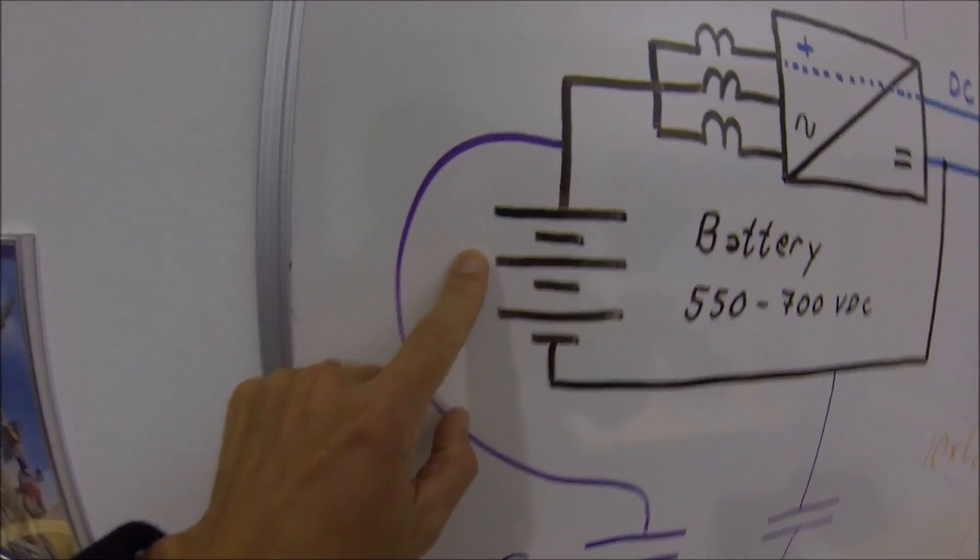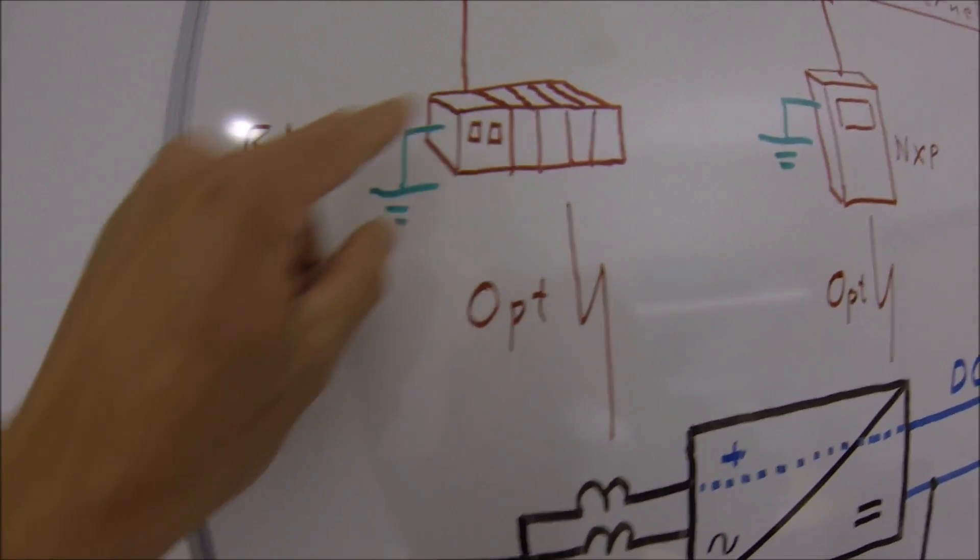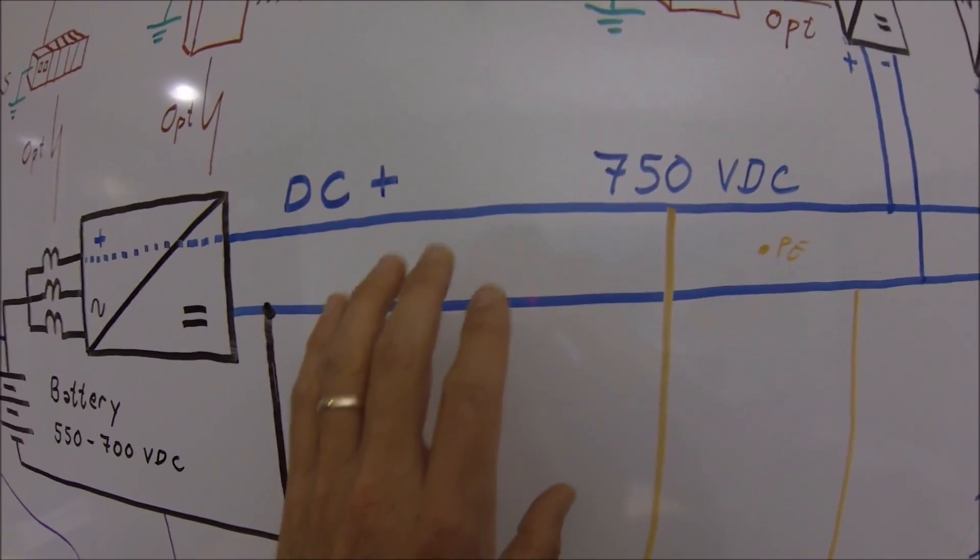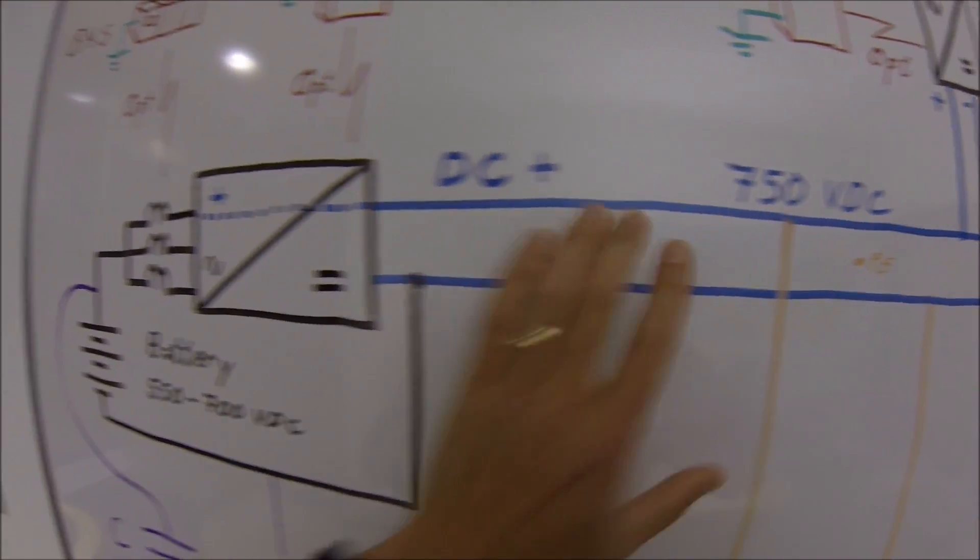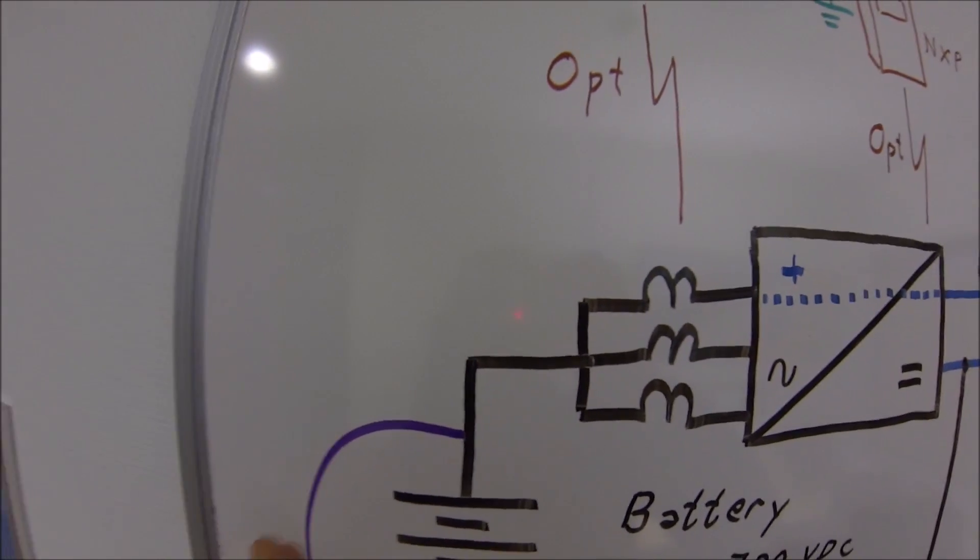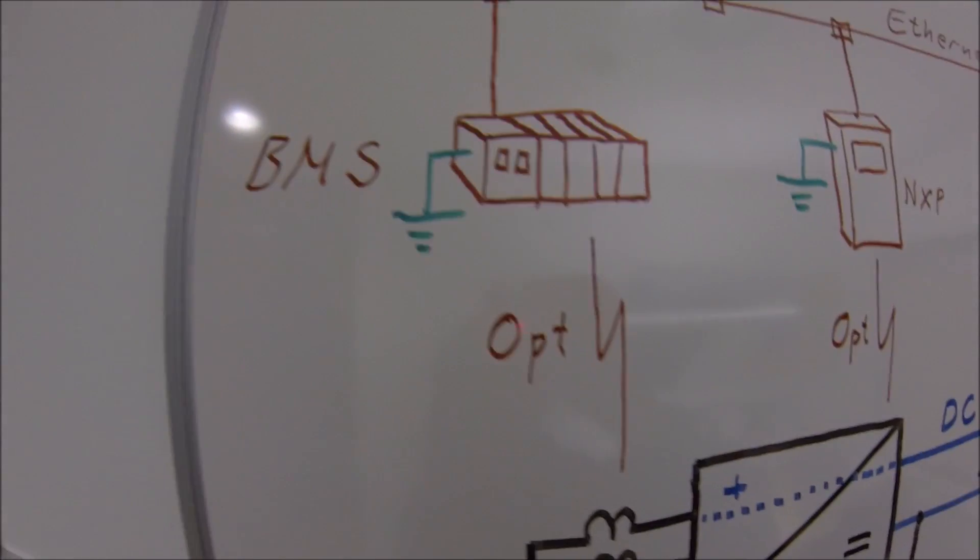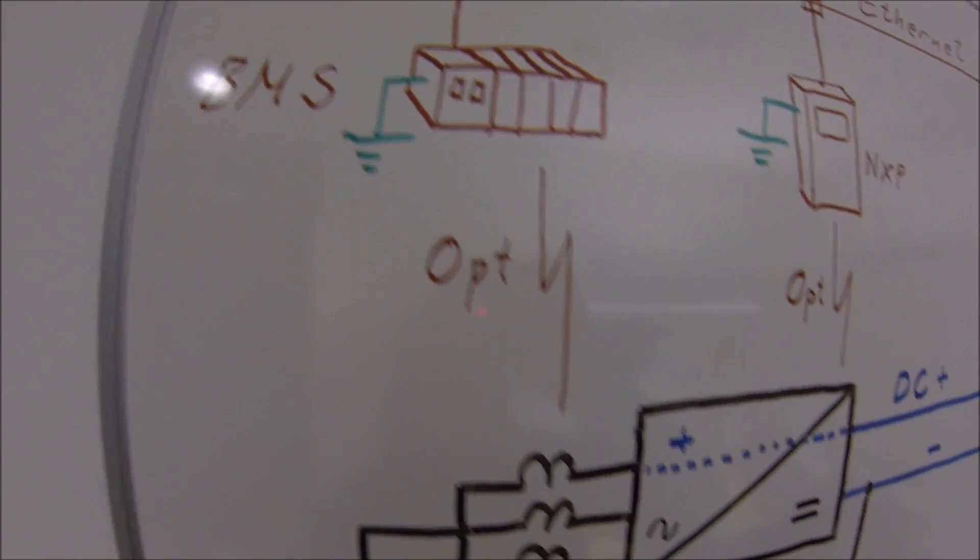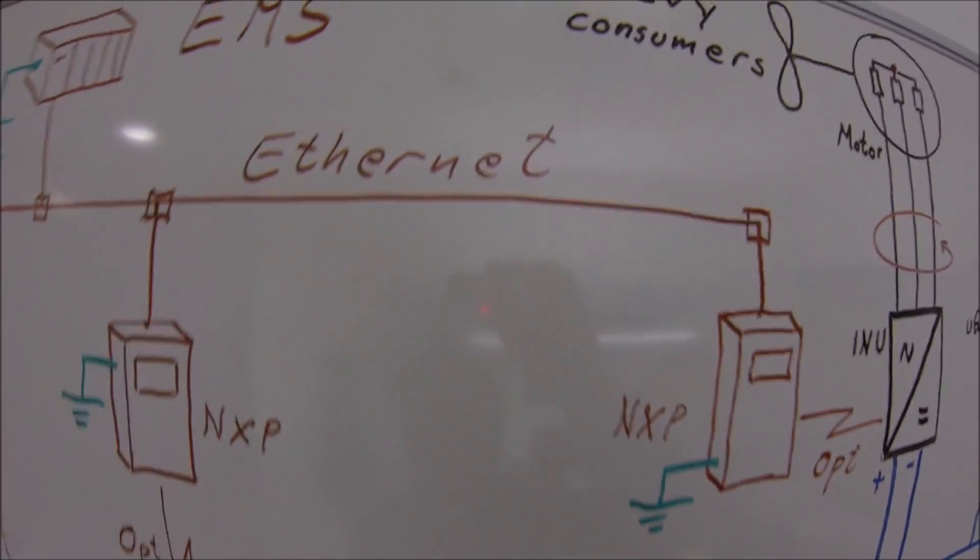Because if you have a galvanic connection to here, well, you in practice have ballasted your DC bus here instead of here. And of course, then you will have currents going on here which disturb the communication system. Same is with the Ethernet and field buses.